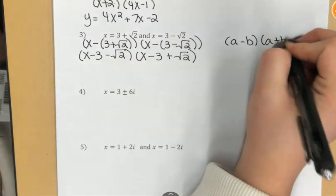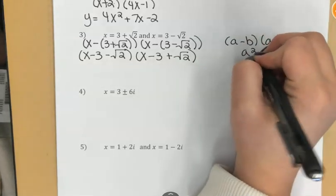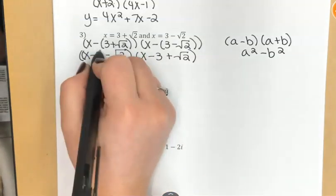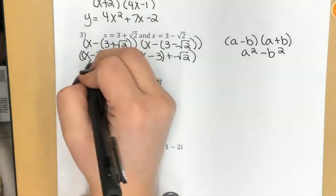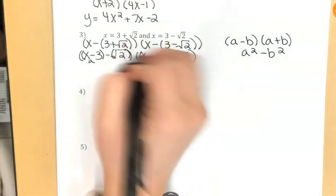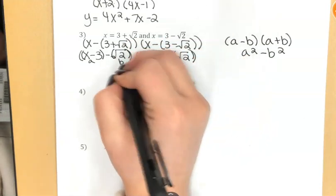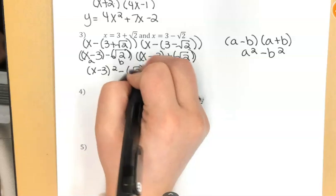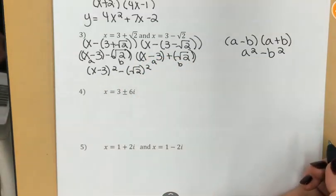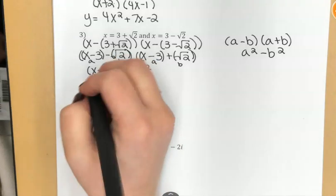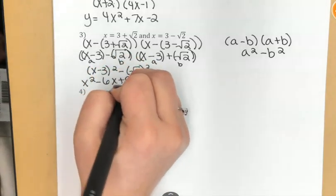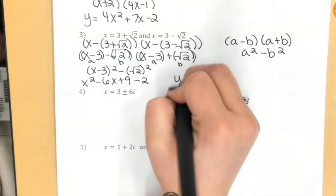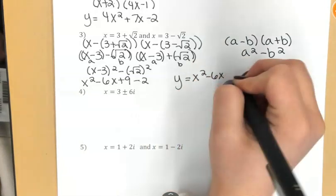But what this really is is like a factor from a difference of perfect squares. Remember, a minus b times a plus b is what I get when I factor a squared minus b squared. So in that case, the x minus 3 is my a and the square root of 2 is my b value. So x minus 3 squared minus the square root of 2 squared is an equivalent expression. So what I can do here now is FOIL this out. And then if I square the square root of 2, that's just going to be 2. Combine those constants. x squared minus 6x plus 7.